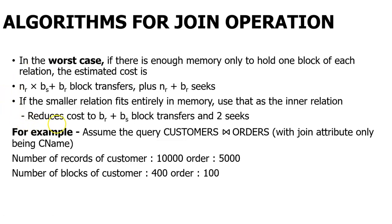The next case is BR + BS + 2 seeks. This applies when you have a small enough table to fit into memory — the join cost is reduced to BR + BS block transfers plus 2 seeks, because you have 2 tables and you need to access both of them.